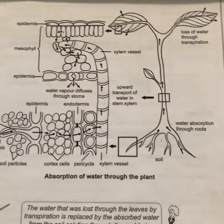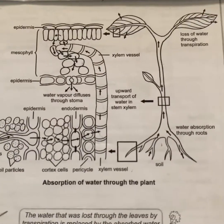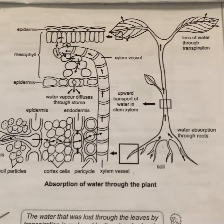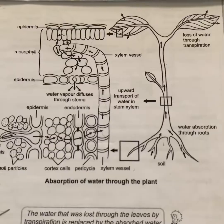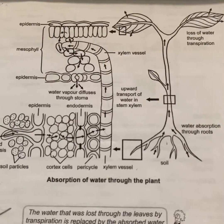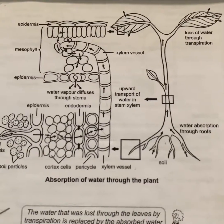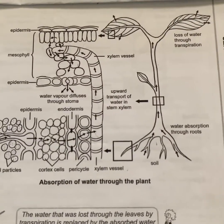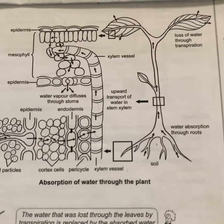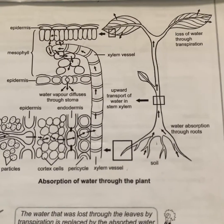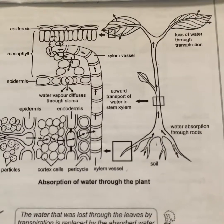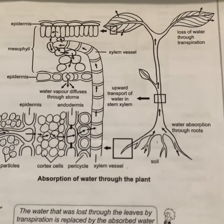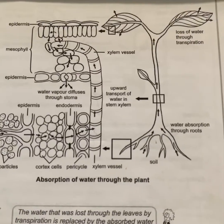Capillarity action has two forces acting on it, but these forces are weak, which is why capillarity alone is not sufficient to move water up the plant. Capillarity consists of cohesion and adhesion forces. Cohesion is the force of attraction between the water molecules themselves, and adhesion is the force of attraction between the water molecules and the walls of the xylem vessels. These two forces work together to ensure that water moves up the xylem vessels in a continuous column.